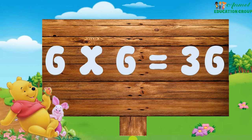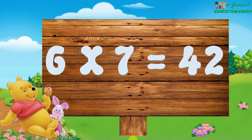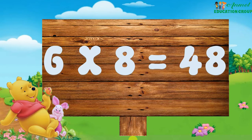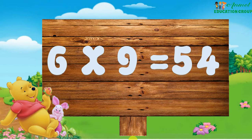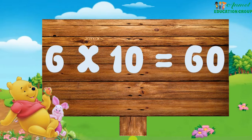Six six are thirty-six. Six seven are forty-two. Six eight are forty-eight. Six nine are fifty-four. Six ten are sixty.